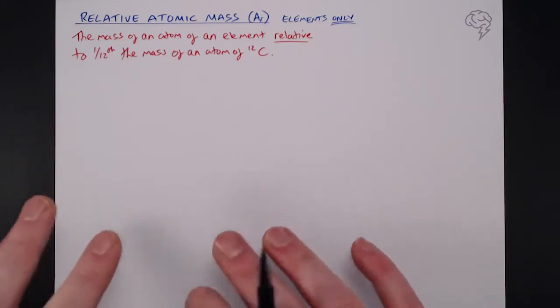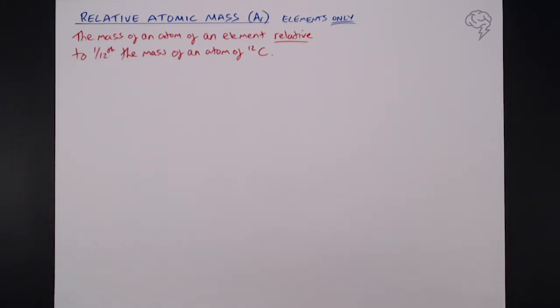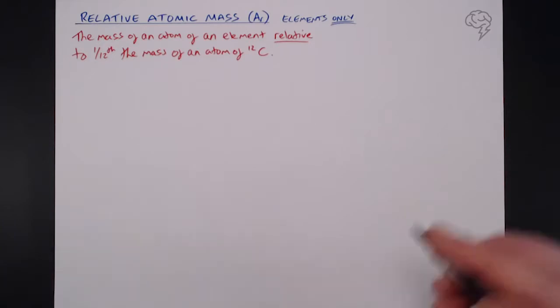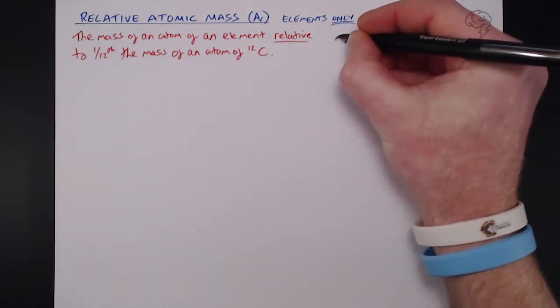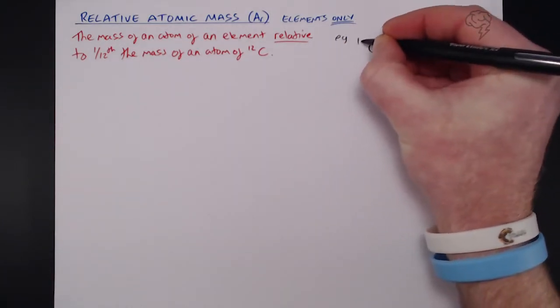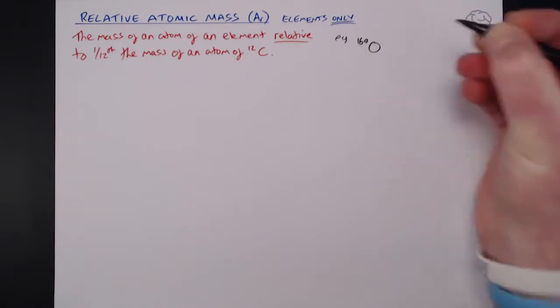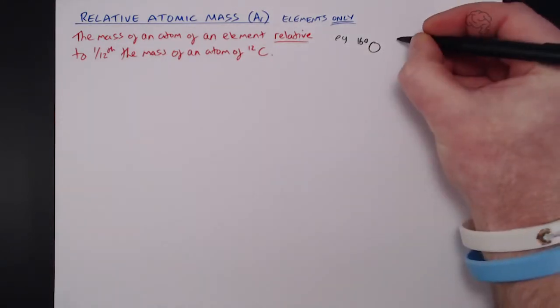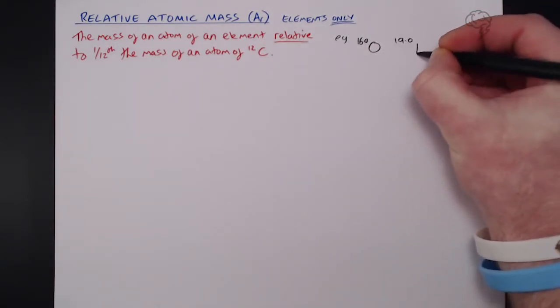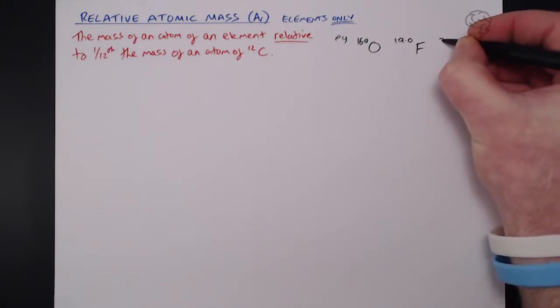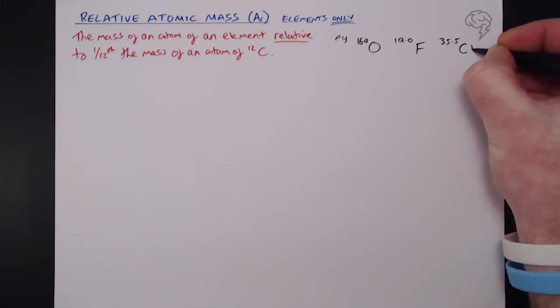So of course, there are going to be elements that are heavier than carbon-12 and elements that are going to be lighter than carbon-12. So for example, we've got oxygen, which has a relative atomic mass of 16. We've got fluorine, which has a relative atomic mass of 19. And chlorine, which is 35.5.